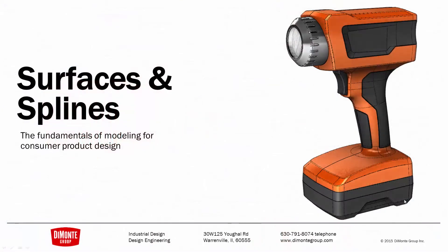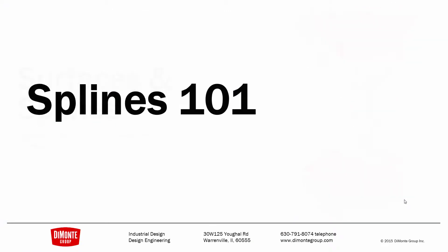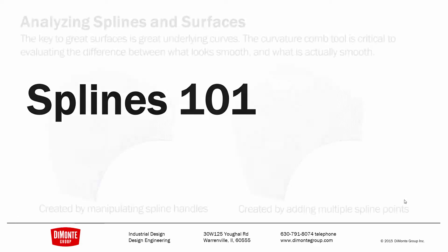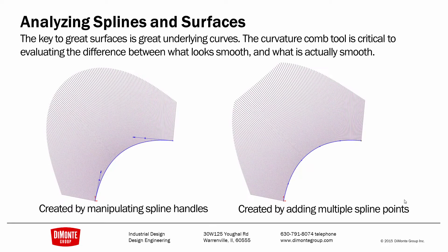In these series of videos, we'll be looking at the production modeling of this work flashlight in SolidWorks. In this installment, we're going to be looking at splines. The key to creating great surfaces in SolidWorks is great underlying splines. And the way to know you have a great spline is analyzing them using the curvature comb tool. There are different best practices for creating splines that we'll cover today.